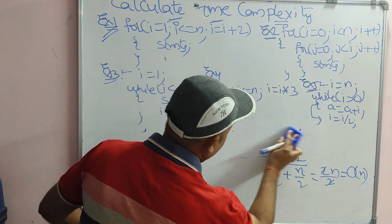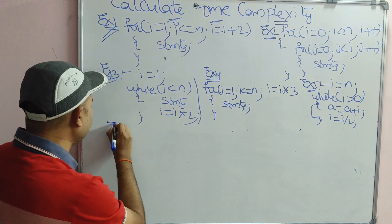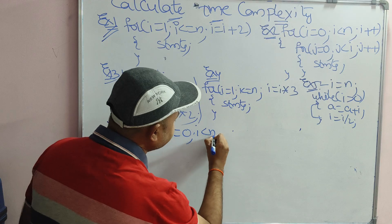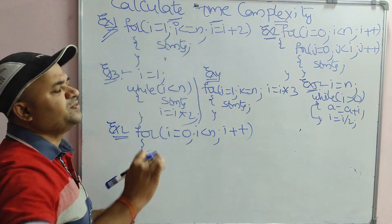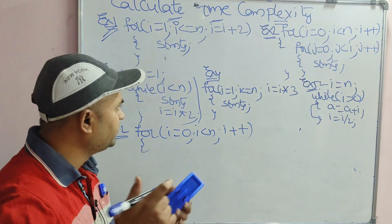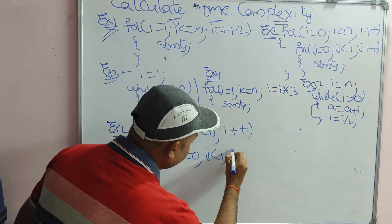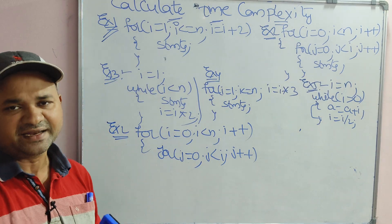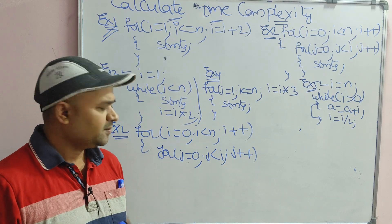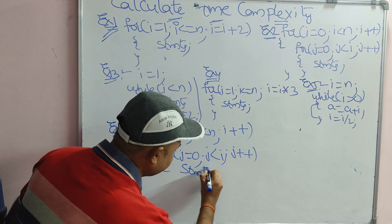Now let us see the second example. We have 2 for loops. If we have 2 for loops, then we can say that the time complexity is order of n square. So 1 for loop means order of n, 2 for loops means order of n square, 3 for loops means order of n cube. Let us check whether it is correct. The inner loop has for j equal to 0, j less than i — here generally the condition would be j less than n, but here the condition is j less than i.